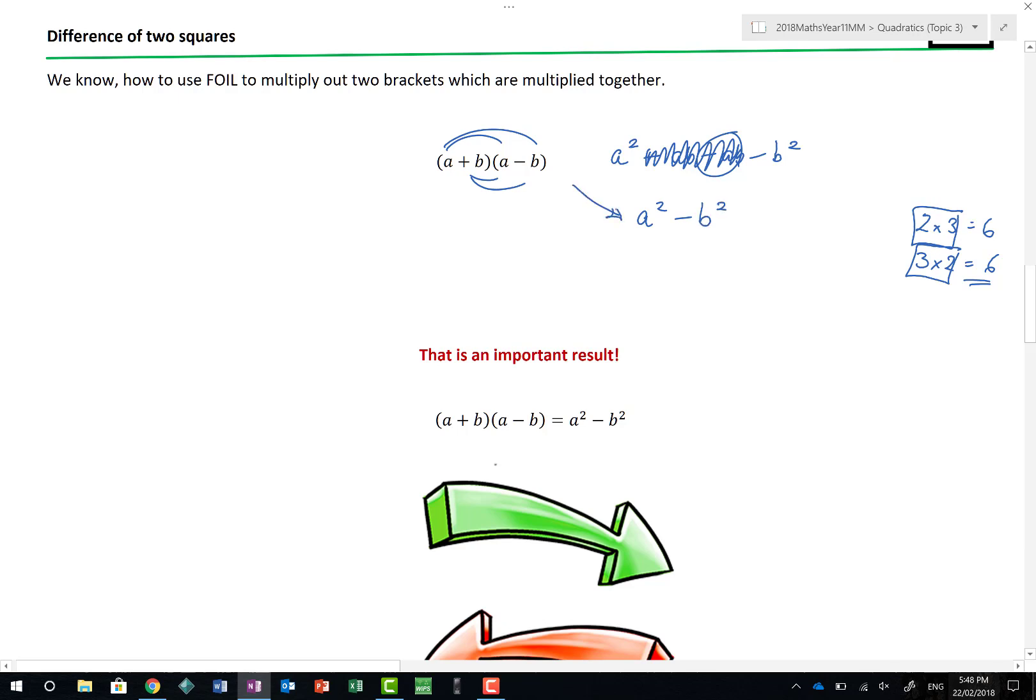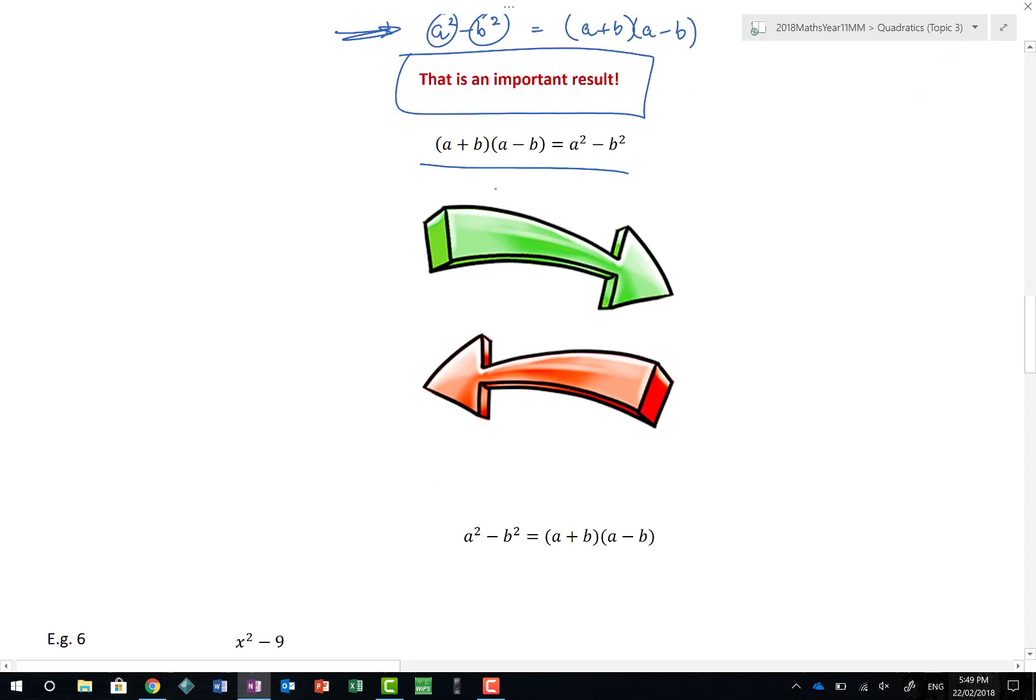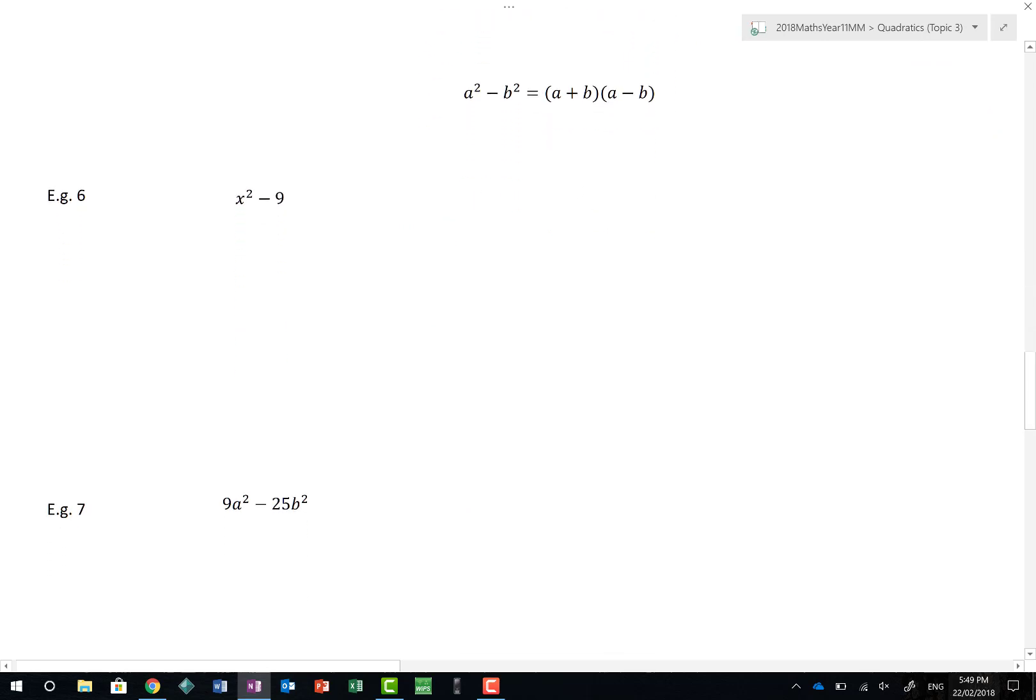That's the order we would normally do things in maths, but what we do forwards in maths we can do backwards. As an important result, a squared minus b squared, when we have a squared term minus a squared term, we can factorise that without doing all of that malarkey we were doing earlier. a plus b times a minus b is a squared minus b squared. What does that have to do with the price of fish I hear you scream?